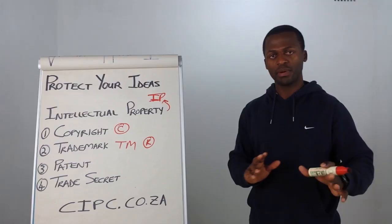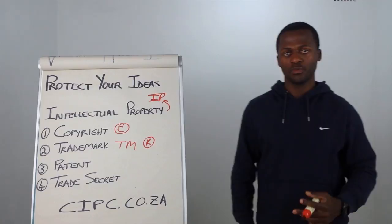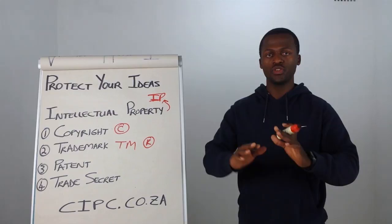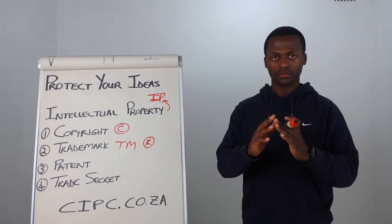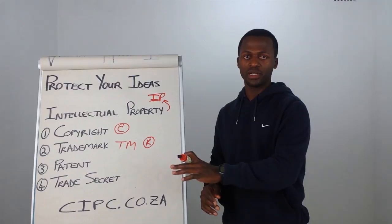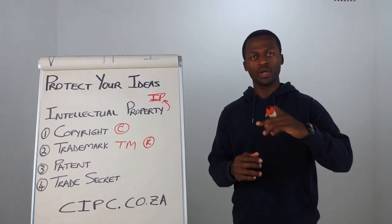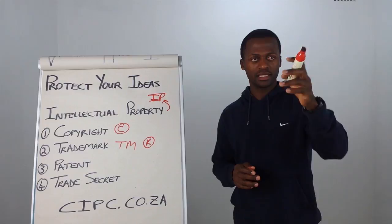Number three is patents. With patents, it's all about new things. So if you have a new design of something or a new way of doing something, you could register a patent for that. For instance, the Coca-Cola bottle — the shape of the bottle — Coca-Cola has a patent on it. Because of how they designed the bottle, even if you remove the label, you could see it from a distance just from looking at the shape and tell that's a Coke bottle right there.